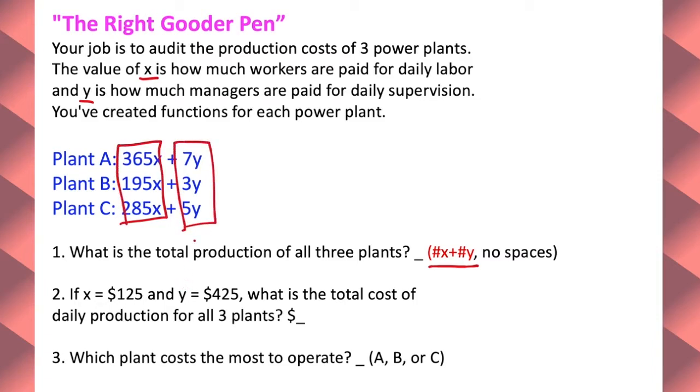Combine all the like terms. So when you combine the 365, the 195, and the 285x, you get 845x. Plus, when you add the y values of 7, 3, and 5, you end up with 15y. So your answer is 845x plus 15y.